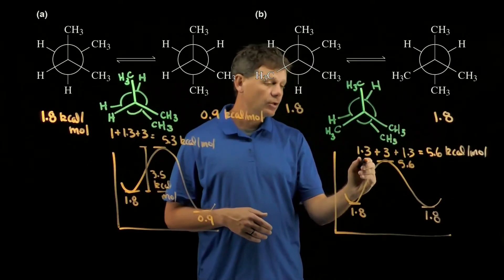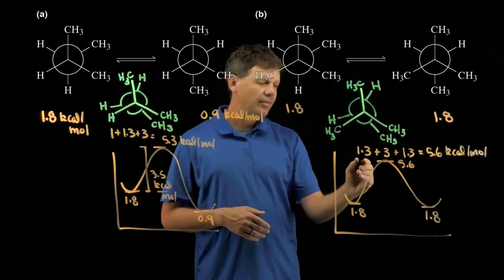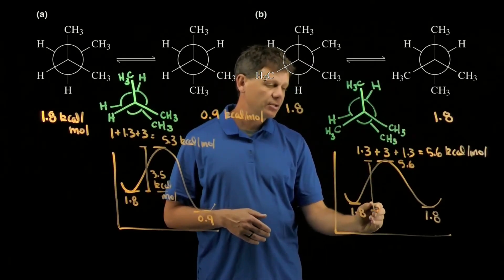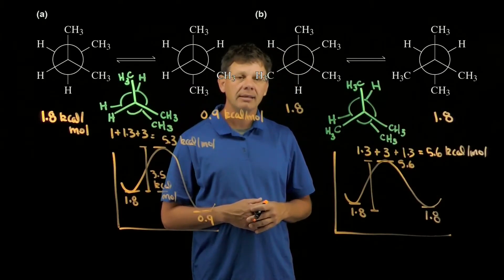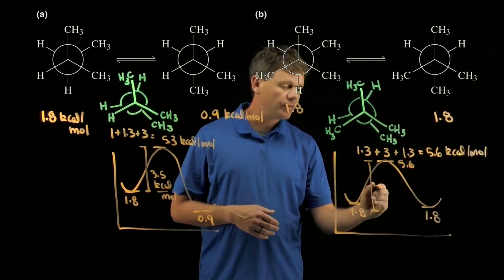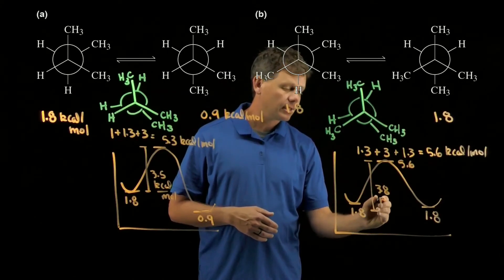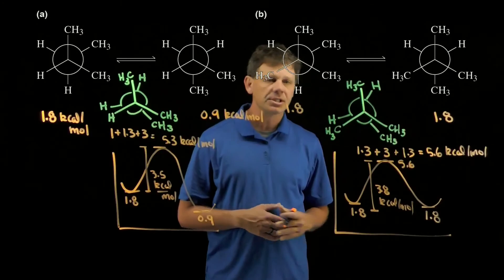The difference in energy between the transition state and the reactant is our activation energy. 5.6 minus 1.8 should give a total of 3.8 kilocalories per mole for the activation energy.